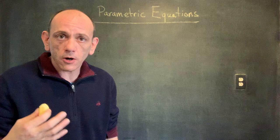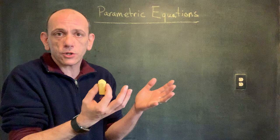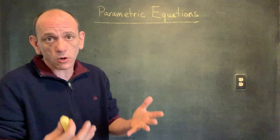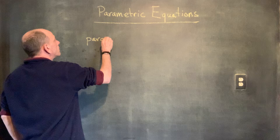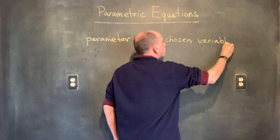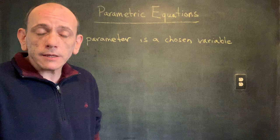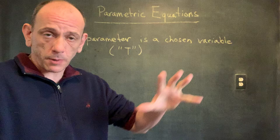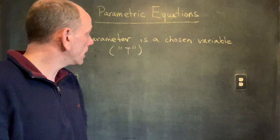Parametric equations are equations written in terms of a parameter. A parameter is just a dummy variable — a variable that we choose, and then we rewrite our other variables in terms of that dummy variable. The parameter is a chosen variable; it can be anything. Typically it's T, because time is usually the independent variable, and everything else — movement in space, X and Y, Z — takes place parameterized by time.